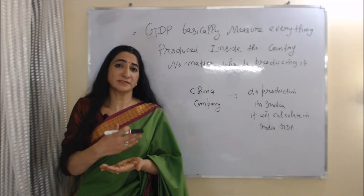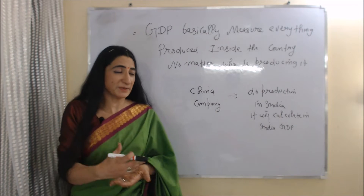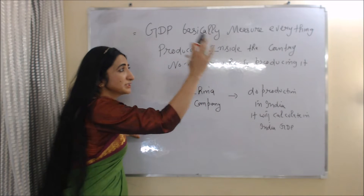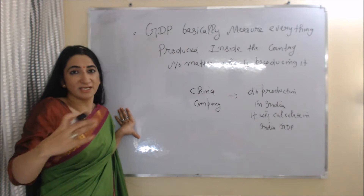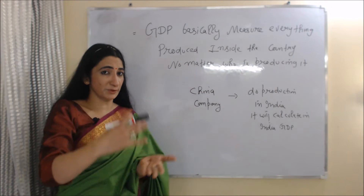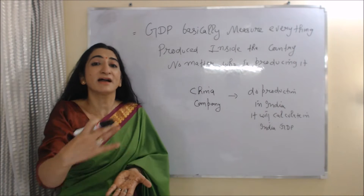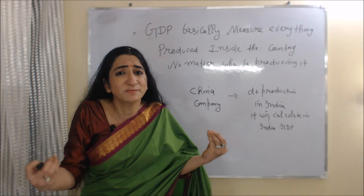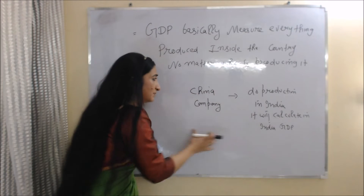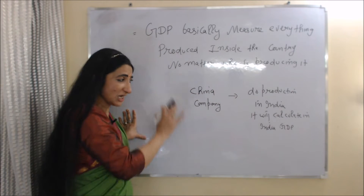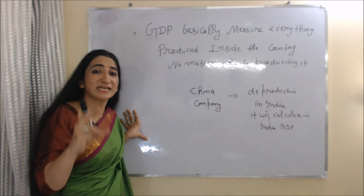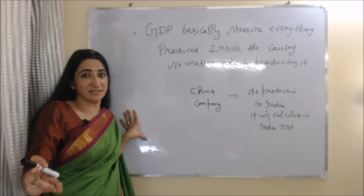One most important thing about GDP is that it basically measures everything produced inside the country, no matter who is producing it. For example, if any company from China does production in India, it will be calculated in India's GDP, not in China's GDP.